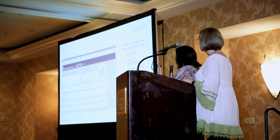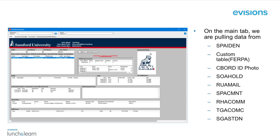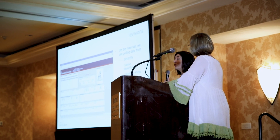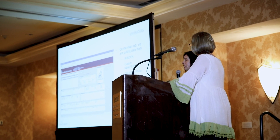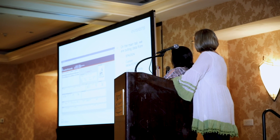We have FERPA information displayed, curriculum data, and address information. As you can see, I listed all the different Banner forms we're pulling data from on this one form. They can quickly look at this one form and see the student, see what level they are, see if they've released their FERPA to their parent if the parent has called in — just a lot of information.